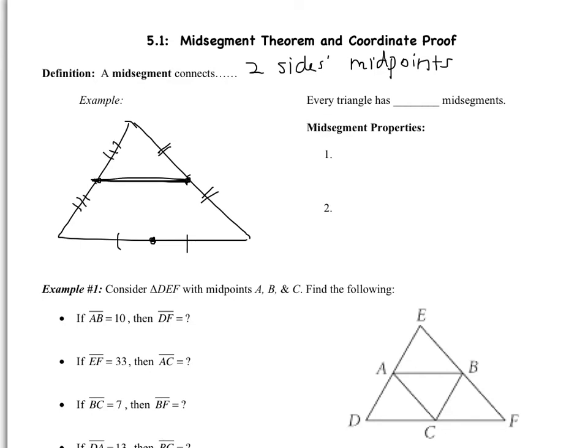So this right here is a midsegment. It connects two midpoints. This one is also a midsegment. It connects two midpoints. This one is also a midsegment because it connects two midpoints. So every triangle has three midsegments.